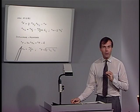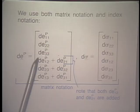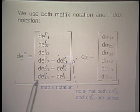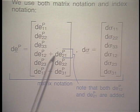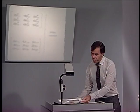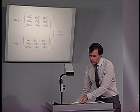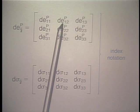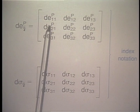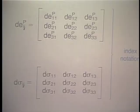We will use both matrix notation and index notation. In matrix notation, the plastic strain vector DEP contains normal components and summed shear components — for example, DEP12 + DEP21 for the 1-2 shear component. The stress vector is defined correspondingly. These conventions must be carefully tracked through the derivations.